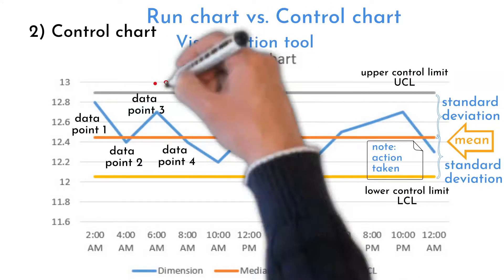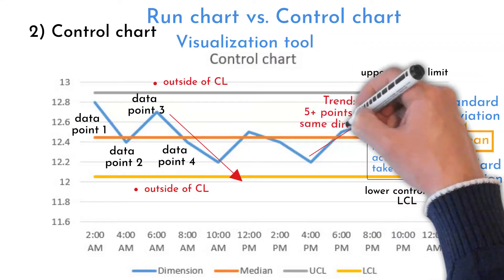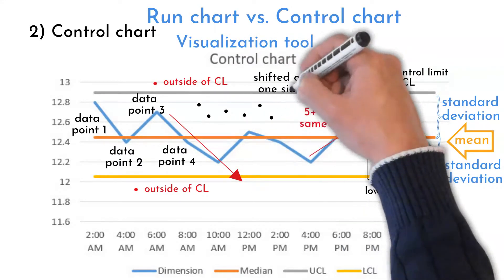Control chart helps with visualization of points outside of the control limits, up or down trends, and a point shift on one side of the mean.